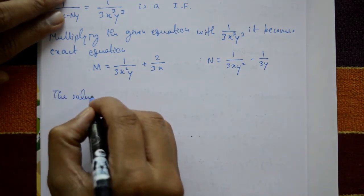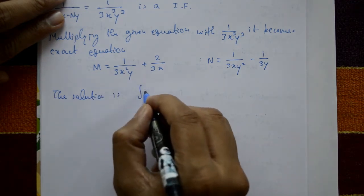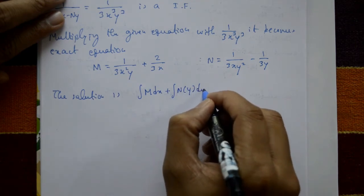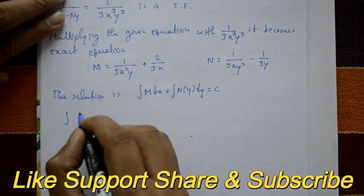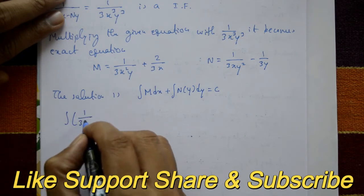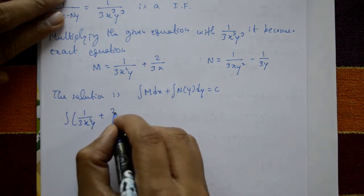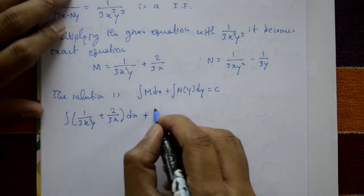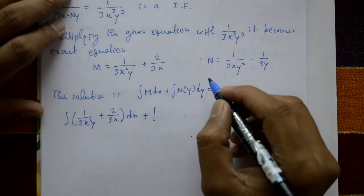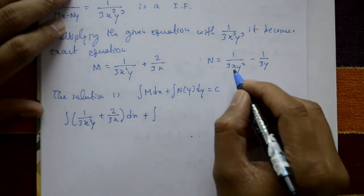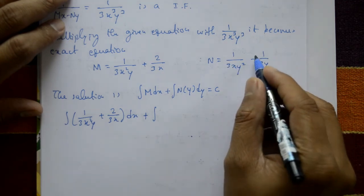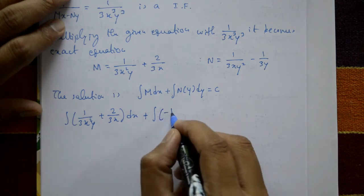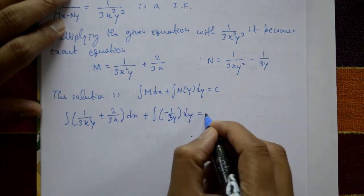Now find the solution. The solution is: integration of M dx plus integration of terms in N not containing x, with respect to y, equal to c. Integrating M = 1/(3x²y) + 2/(3x) with respect to x. For the N part, take only the term not containing x, which is -1/(3y), with respect to y.